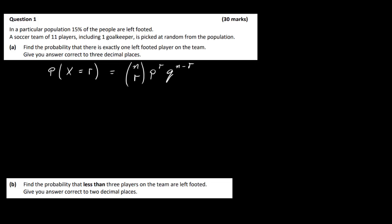For part a, we need to find the probability that there is exactly one left-footed player on the team. The probability of being left-footed is 0.15, since at the very beginning it states that 15% of the population is left-footed. That means the probability of being right-footed is 0.85. We take success as being left-footed and failure as being right-footed.